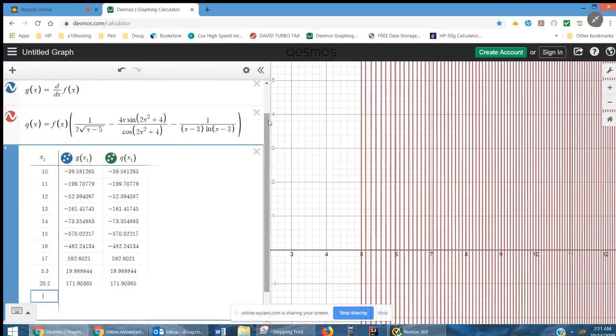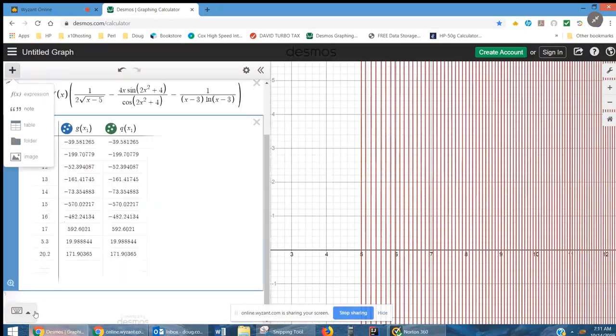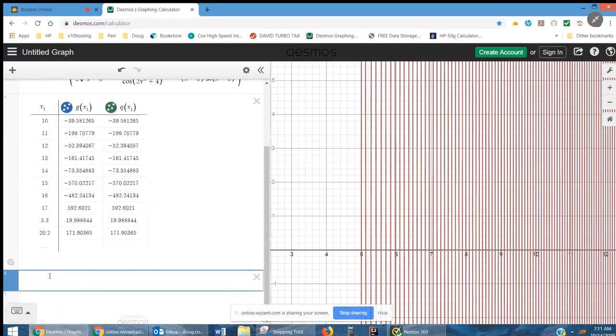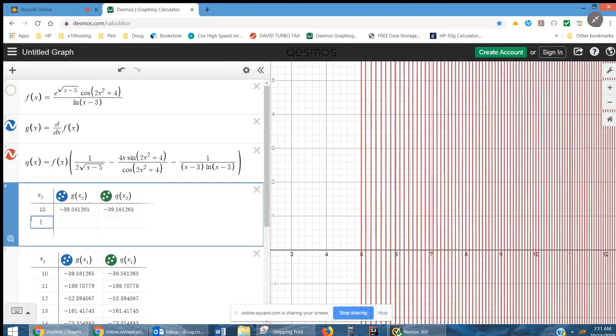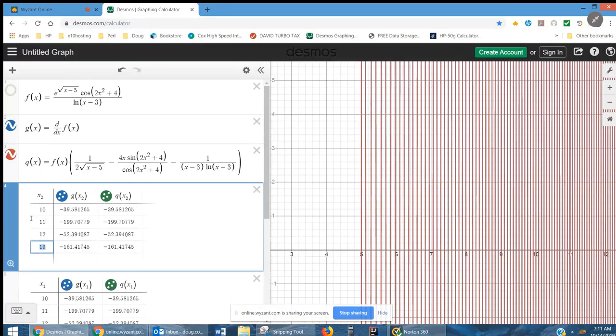And just to be clear, how I inserted a table here on Desmos, insert table, here we go, x sub 2. I change these y's to g of x sub 2, and add a column q of x sub 2, and then put numbers in here like 10. And then I can go like this. Okay. There you go. Hope that helped.